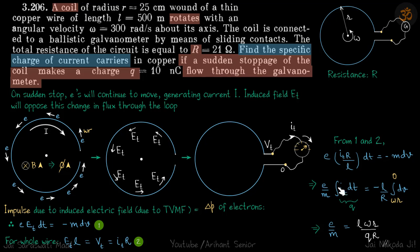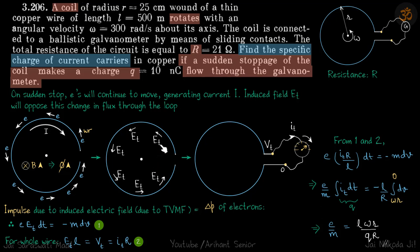Integrating both sides — the left side gives e·R·Q/L and the right side gives m times the change in velocity from omega r to zero — we get the specific charge ratio: e/m = L·ω·r / (Q·R). This is a very nice problem combining impulse and electromagnetic induction in the same solution.